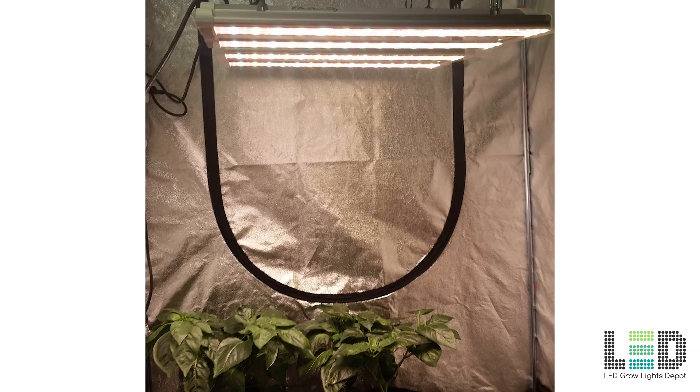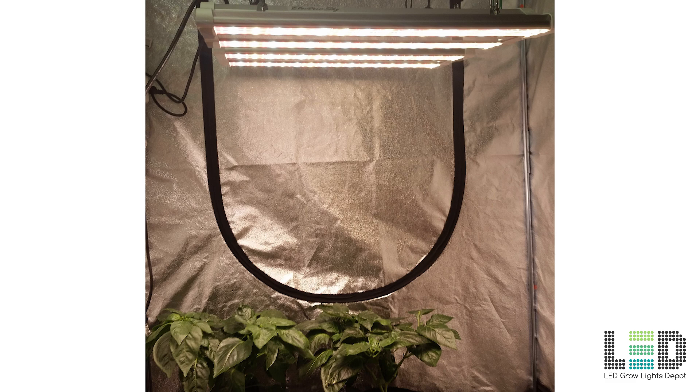Two ES180s will cover a 4x4 area for vegetative growth and will flower a 3x3 area with really good even intensity. Two lights may be used in up to a 4x4 space for flower, but expect less light per square foot.